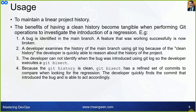A feature that was working successfully is now broken. A developer examines the history of the main branch using git log. Because of the clean history, the developer is quickly able to reason about the history of the project and identify when the bug was introduced using git log. The developer then executes git bisect. Because the Git history is clean, git bisect has a refined set of commits to compare when looking for the regression, and the developer quickly finds the commit that introduced the bug.